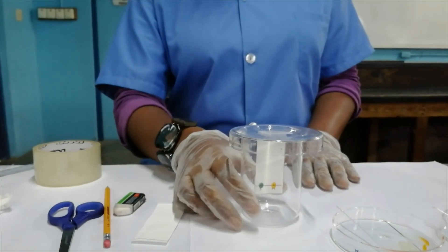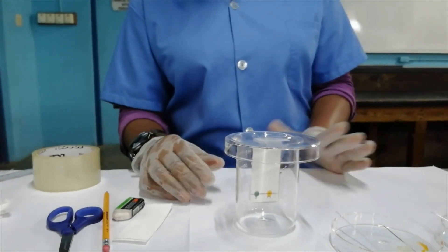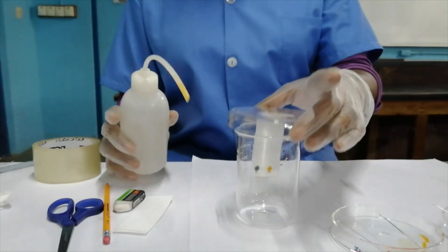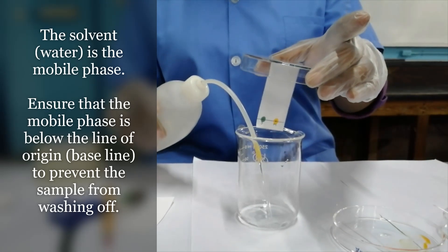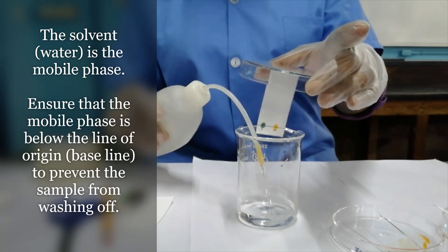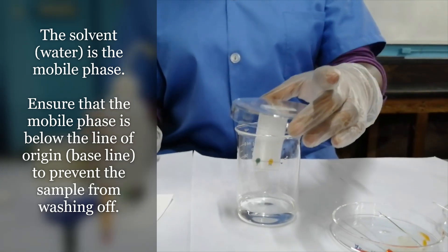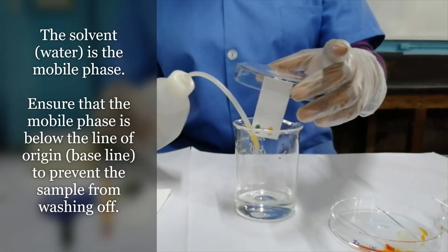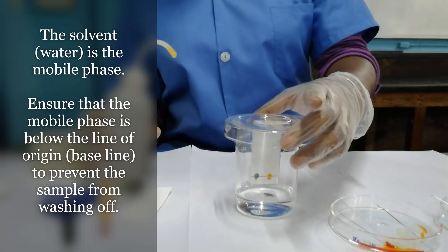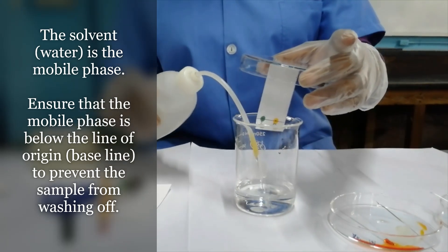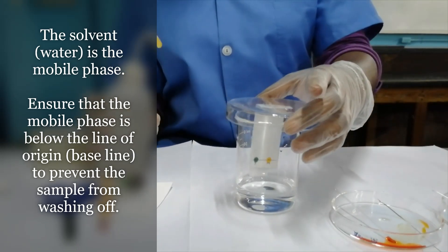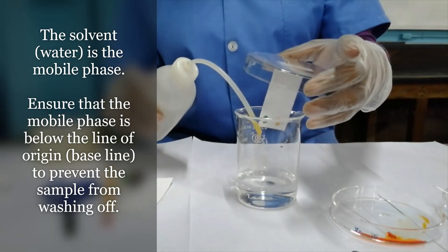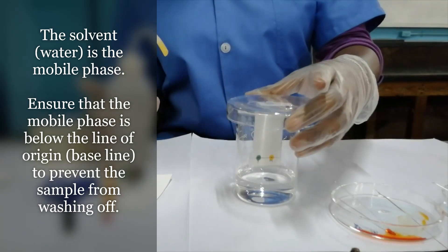What I'll do now is add water, which is my solvent or mobile phase, until the water just touches the tip of the paper. I do not want it to pass the tip because the spots will run down into the reservoir instead of traveling up the paper. I want the spots traveling up the paper, not running down.